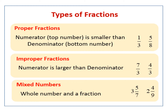Now let us understand types of fractions. In the types of fractions, we are going to understand what is proper fractions, improper fractions, and mixed numbers or mixed fractions. Proper fractions are the fractions where the numerator is smaller than the denominator. That means the top number is smaller than the bottom number. You can see the examples: one upon three and five upon eight. In one upon three, one is smaller than three.